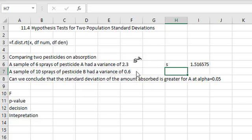10 sprays of pesticide B has an s squared variance of 0.6. Again, if I wanted to know the standard deviation, we could do sqrt, open a parentheses, 0.6, close the parentheses, and the standard deviation is 0.77.